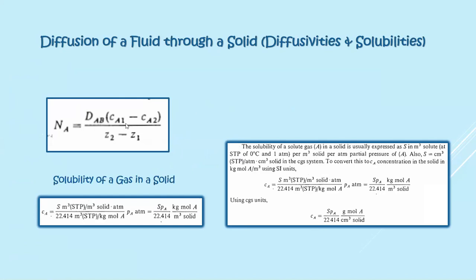For solubility of a gas in a solid, if you want to know how soluble a gas is in a given solid, the formula uses S. The unit for S is cubic meter at STP per cubic meter of solid per ATM. This S is multiplied by the partial pressure of the gas in ATM and divided by the constant 22.414 cubic meter at STP per kilogram mole of A.